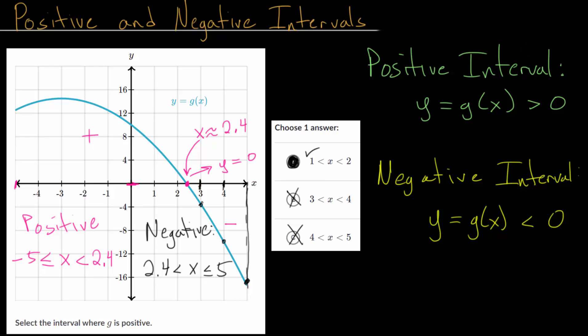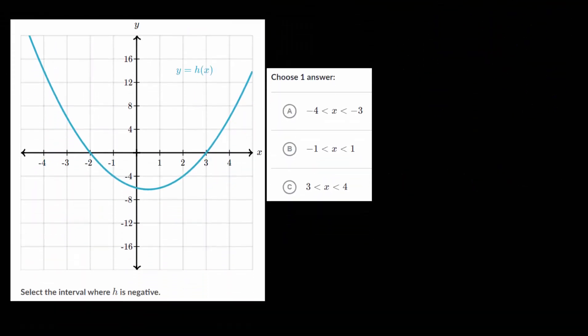With this in mind, let's look at some different example problems. They're all going to be fairly similar. So this one, we want to select the interval where h is negative. That essentially is when our curve is below the x-axis.